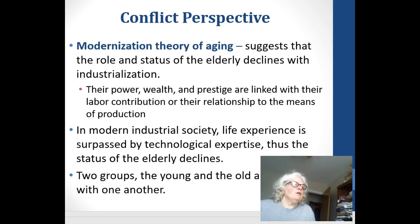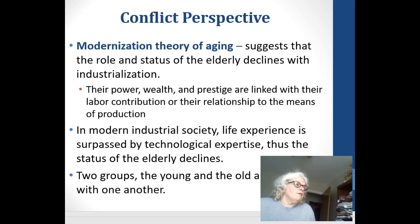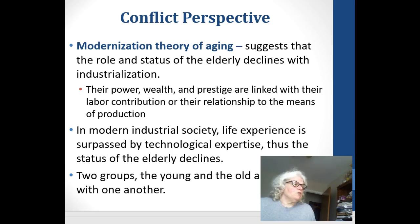In conflict theory, the modernization theories of aging suggest that the roles and status of the elderly decline with industrialization. Their power, wealth, and prestige are linked to their labor, and when they give up their labor, they lose that power. In a modern industrial society, though, people can work until much older ages, and it's often practical to keep working because their expertise is needed in the industry.